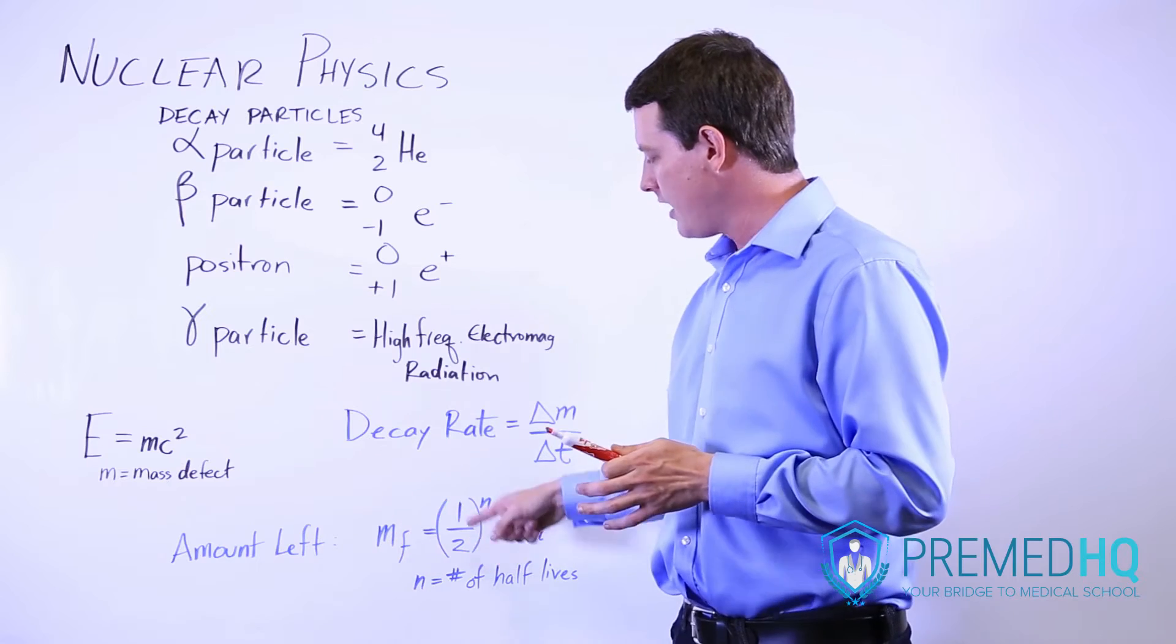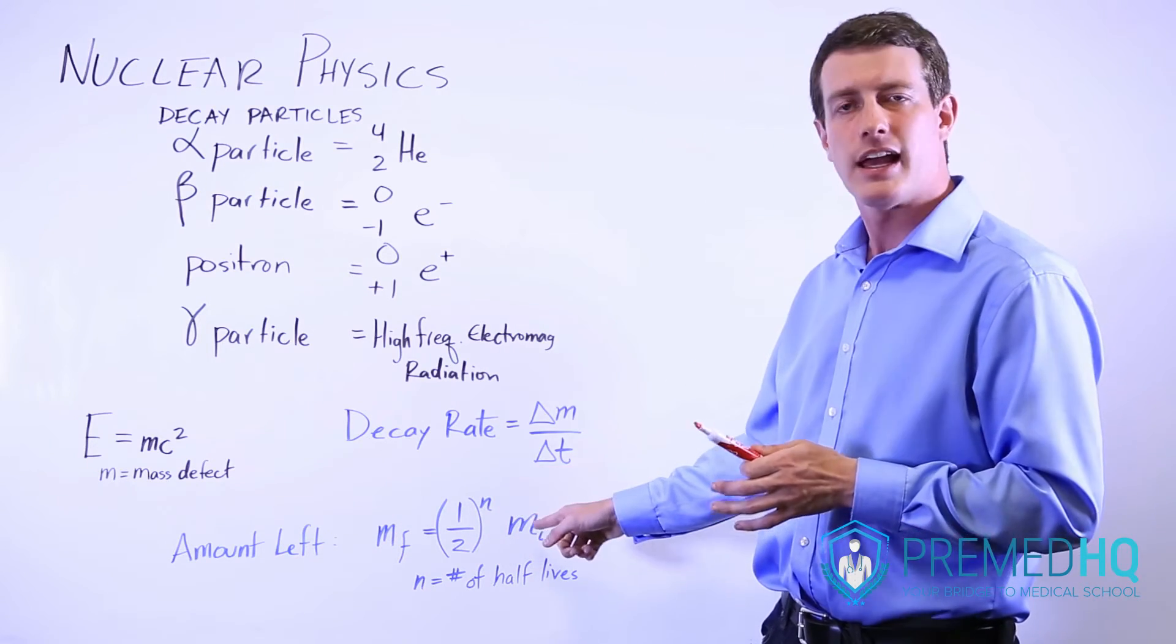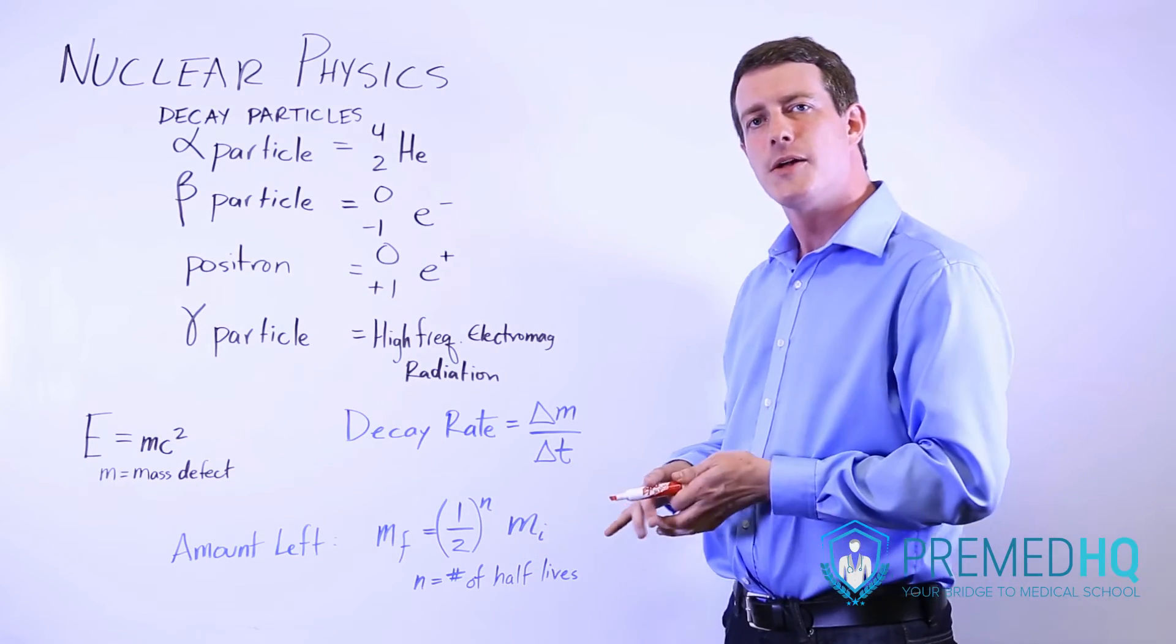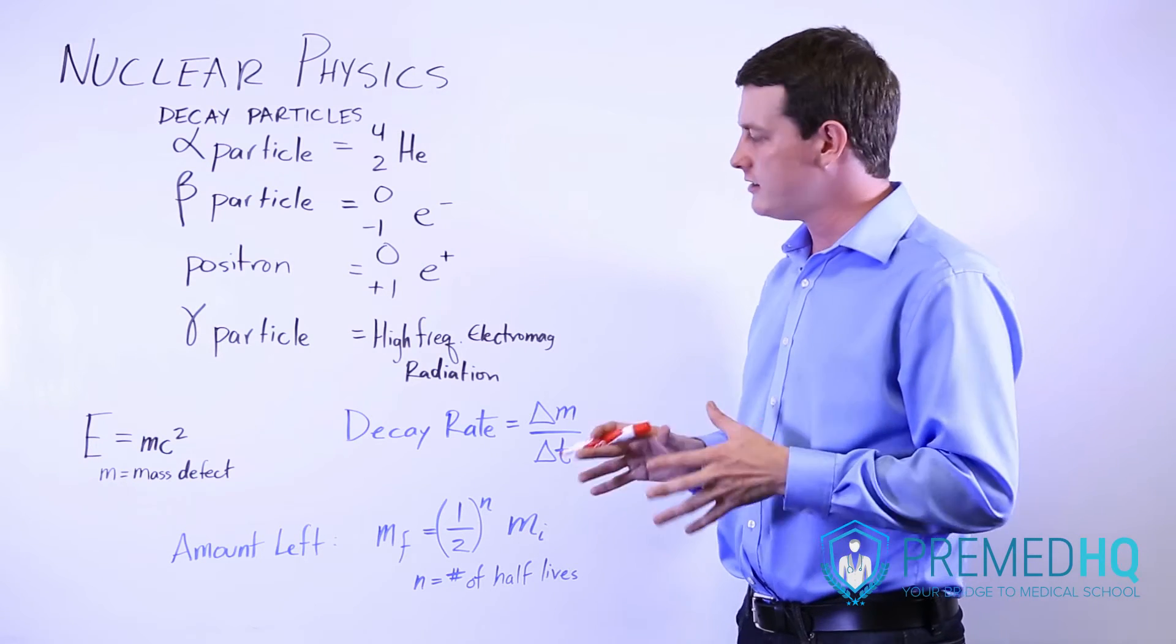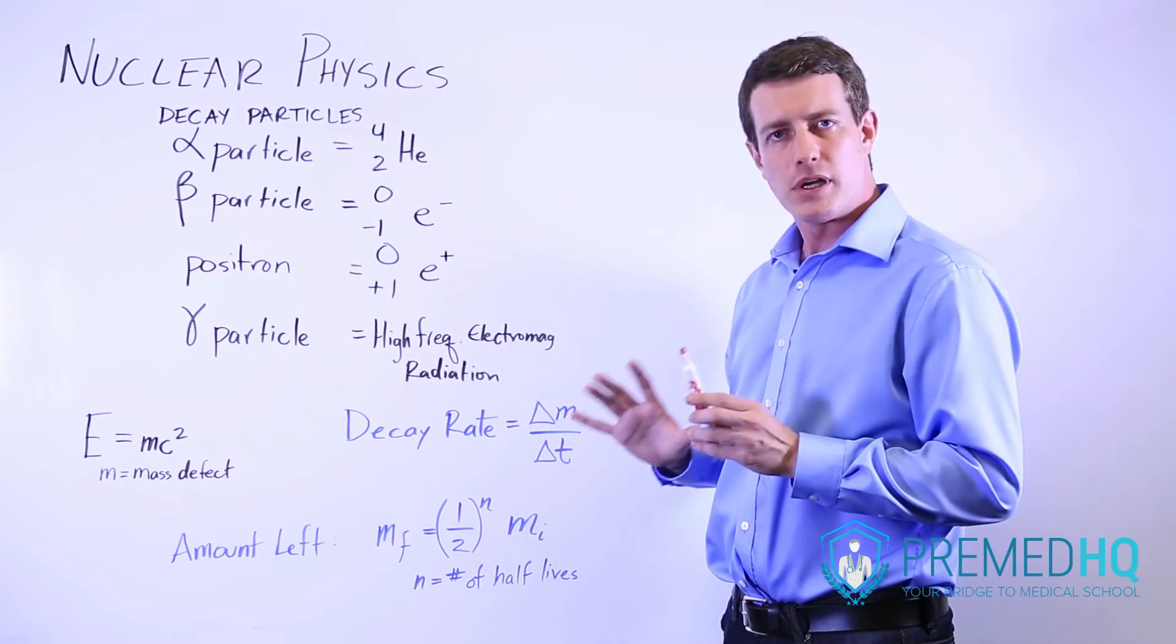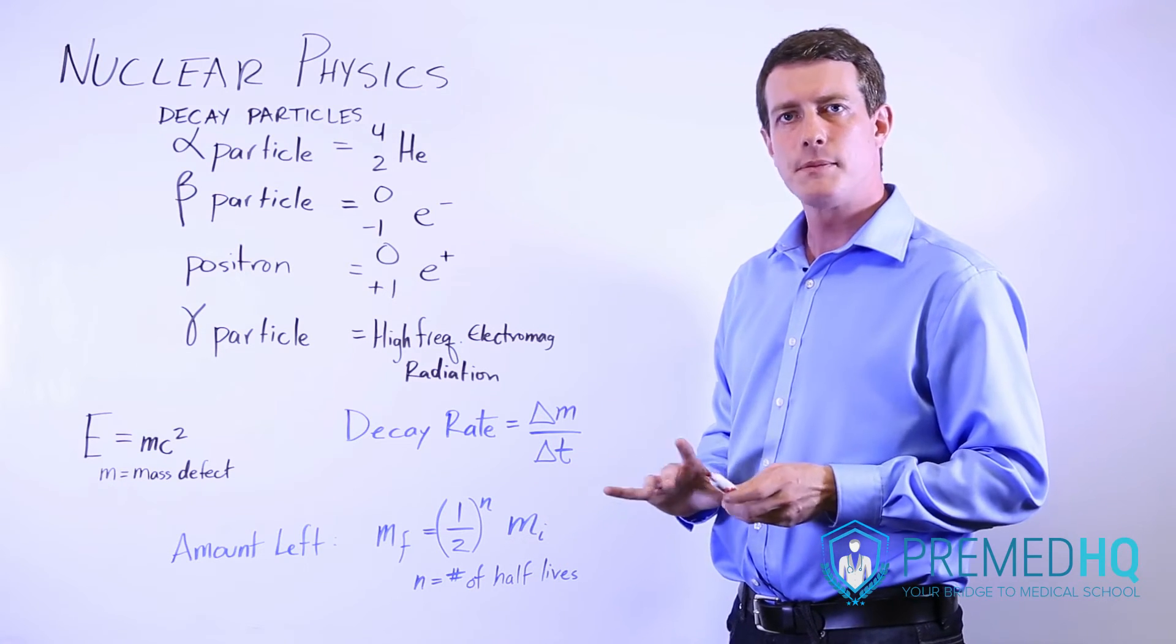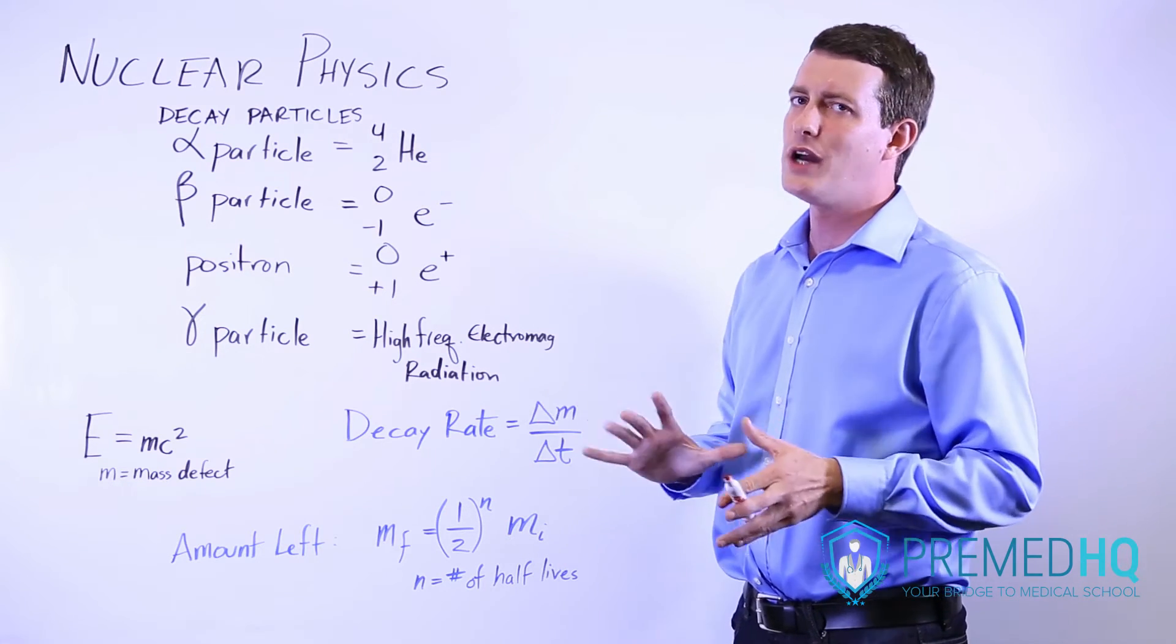The final mass equals one-half raised to the n times the initial mass. And that's how they do radiocarbon dating and a lot of nuclear-type dating. And the n here, be aware that that is the number of half-lives.